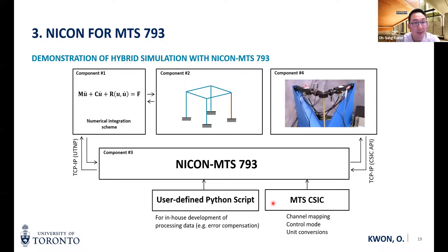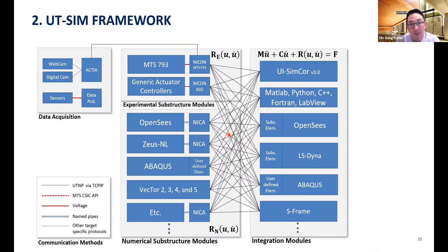The next demonstration will show an example of running hybrid simulation where a system is built as a three-dimensional, one-story, one-bay frame, and one of the columns is represented experimentally. We will use NICOM MTS-793 to facilitate communications between the numerical model and the specimen. Various analysis software will be used such as OpenSees or Abaqus. Through this development, any researchers and engineers can use any of these programs to represent the system-level model, and special specimens tested with MTS 793 software can be integrated in the hybrid simulation. If needed, part of the system can be modeled in more detail using Abaqus, Vector, or OpenSees as well.